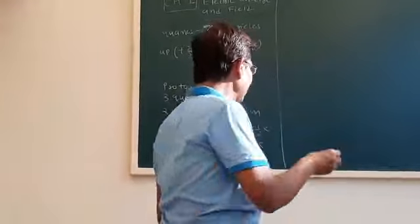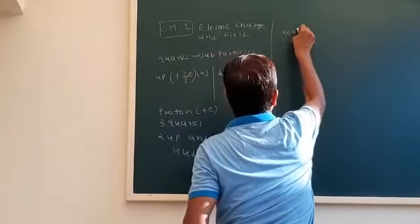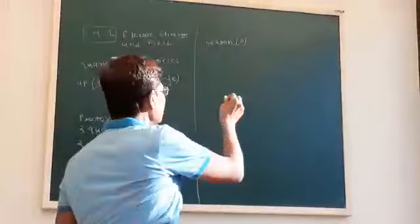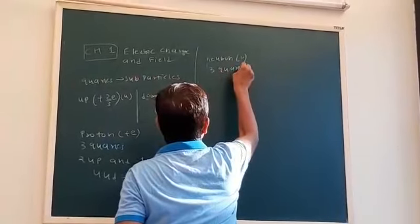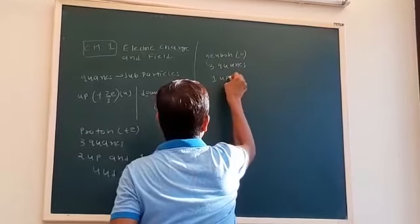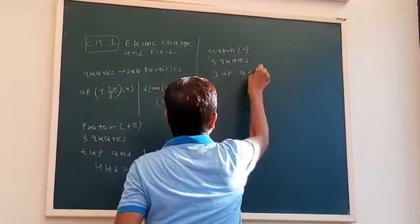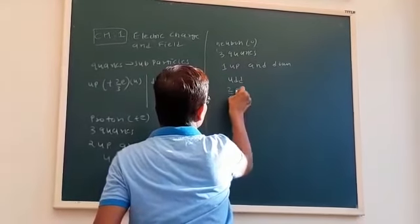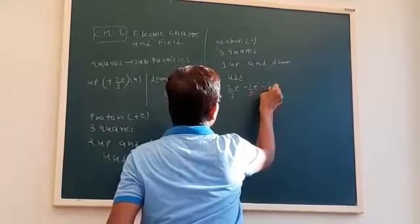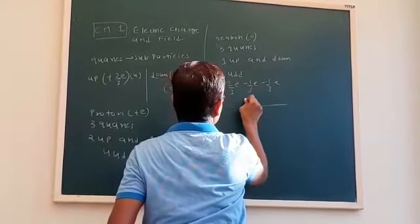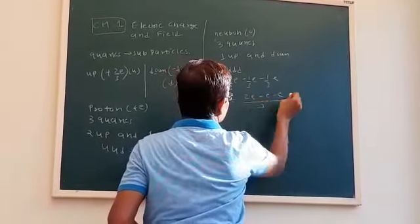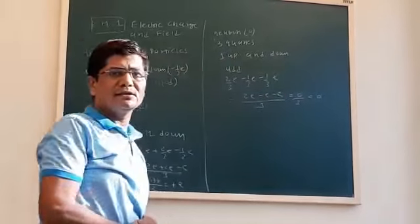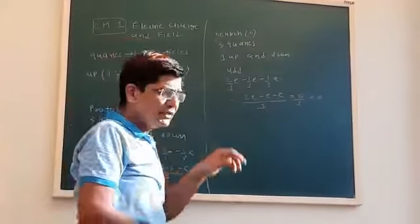Similarly, the neutron also has 3 quarks. The neutron has no charge, it is zero, and it is also made up of 3 quarks: 1 up and 2 down. So we can say the structure is UDD. We can see that 2/3 E − 1/3 E − 1/3 E gives 0, confirming the structure of the neutron is UDD.